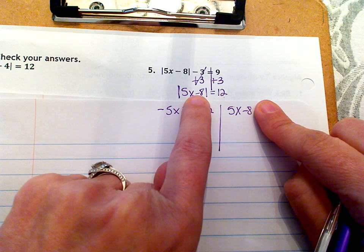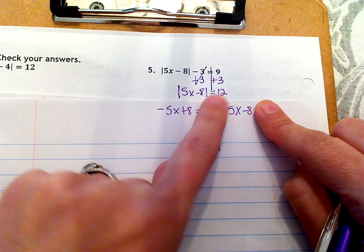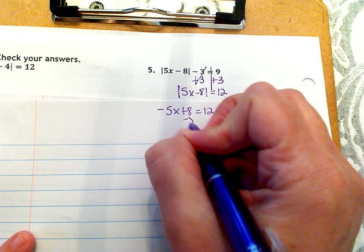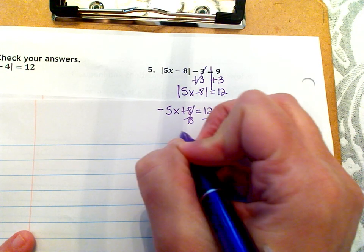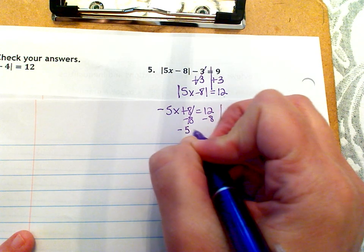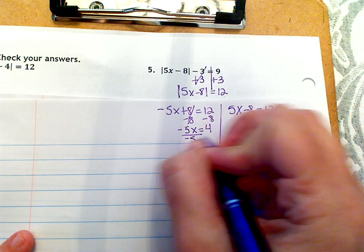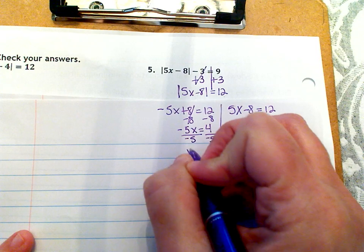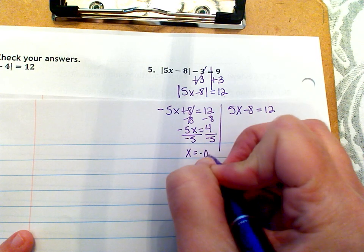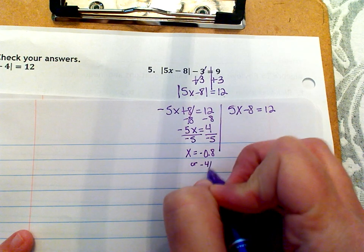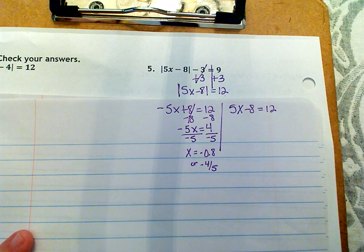So remember your two expressions that you're going to start with that both equal 12. One of them is exactly what's inside the bars. The other one is the opposite. And don't just change the middle sign, make sure you change both terms. And then all we have to do is solve both of those. So we subtract. This gives me negative 5x equals four. And then we divide by negative 5. So x equals negative 0.8, or you could say negative 4 fifths. Either one of those would be correct.